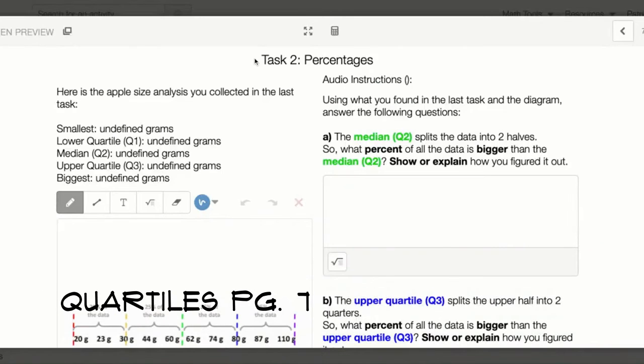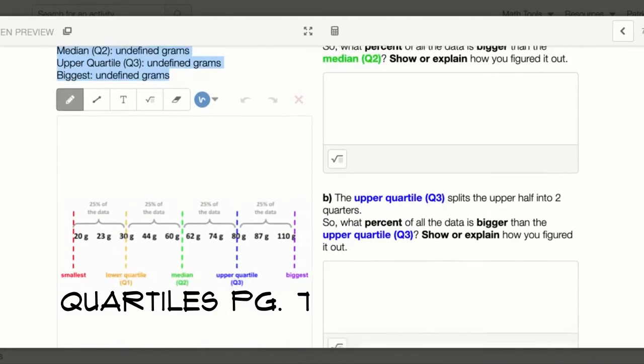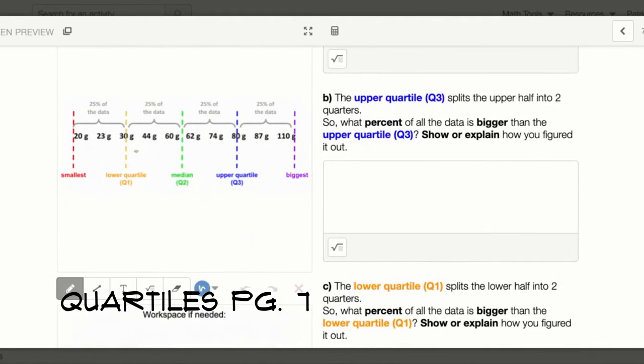Page 7. The title is task 2: Percentages. Here is the apple analysis you collected in the last task, meaning that you'll see your numbers here if you did the previous page. Over here you could see where the smallest is, the lower quartile Q1, the median, the upper quartile, and the biggest.